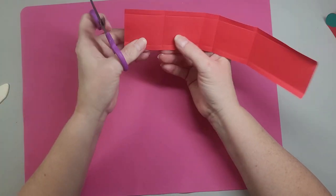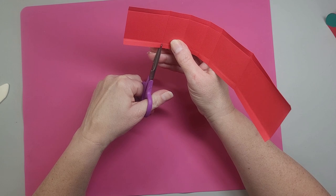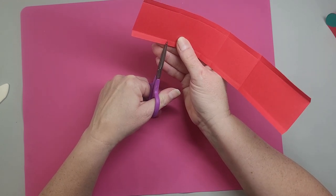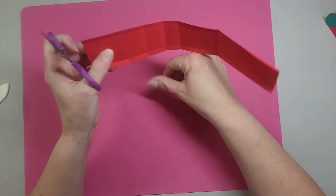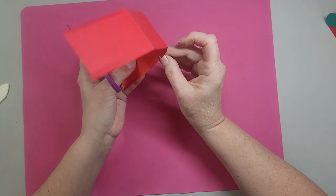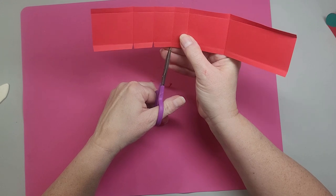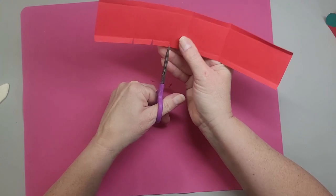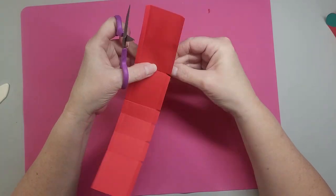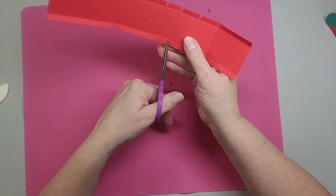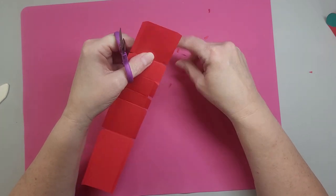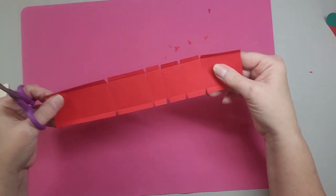All right. So now we're just going to take scissors and snip up past the score line at each of these. And if you want to, you can put a little wedge in there if you think that will make it easier for you to fold it. But the first one I made, I didn't bother and it was fine.